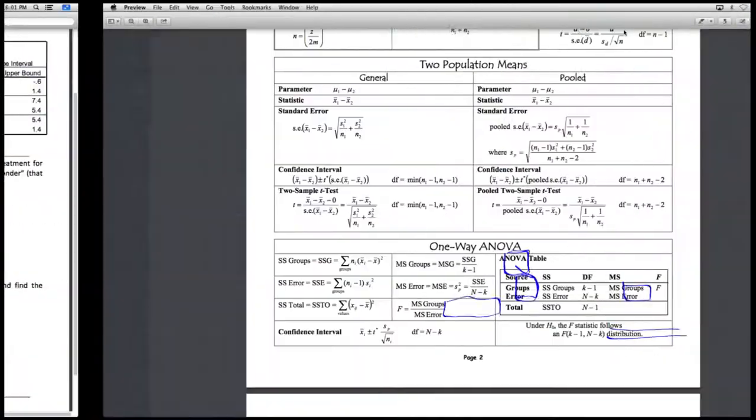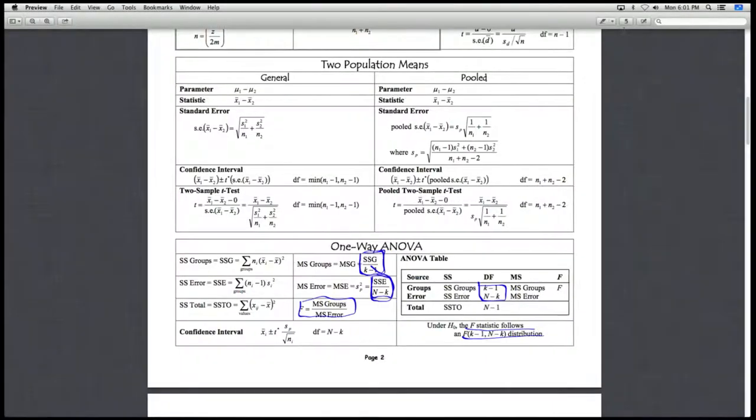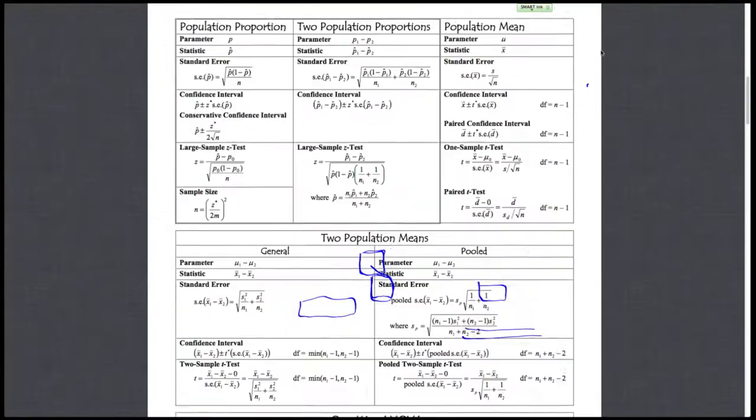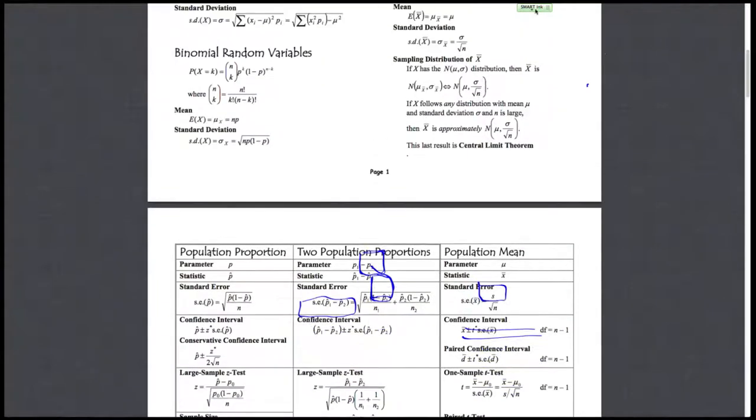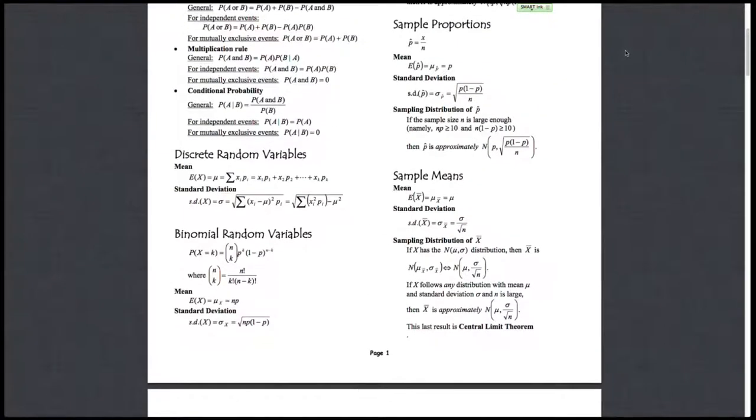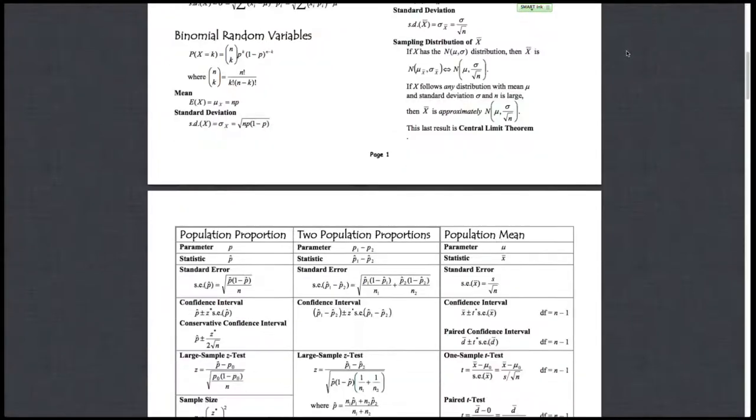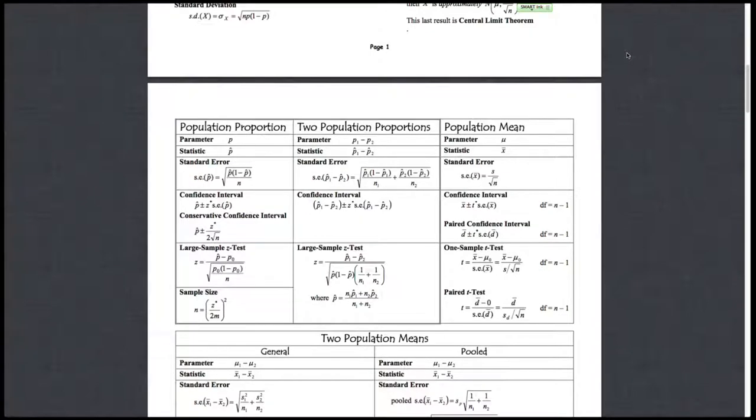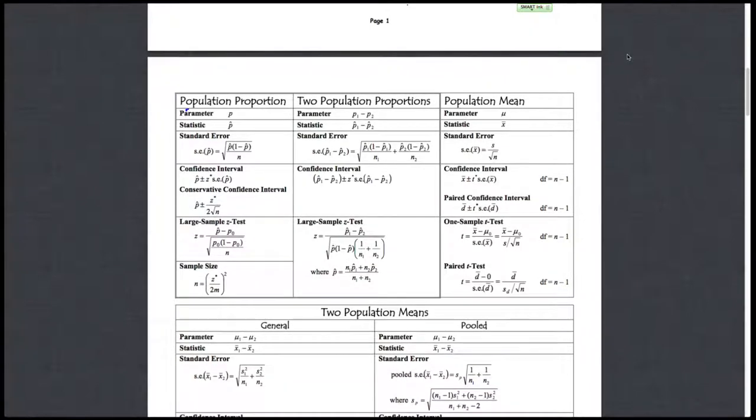So we go to our formula card, and we go up to our population proportion section. What we're going to do is compute a large sample z-test.